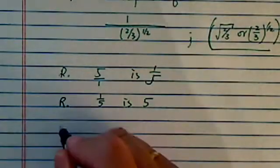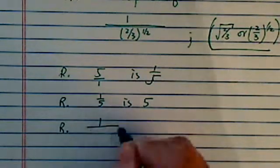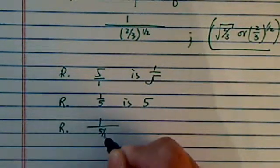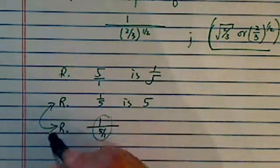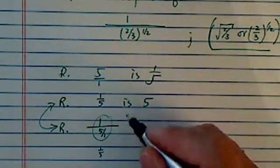Reciprocal of 1 over 5 is 5. Now let's try this. Reciprocal of 1 over 5 over 1. Now we know this is really just 1 over 5. So these two are the same case.